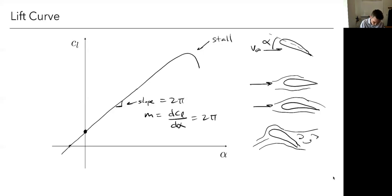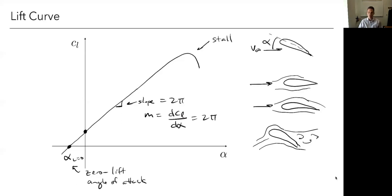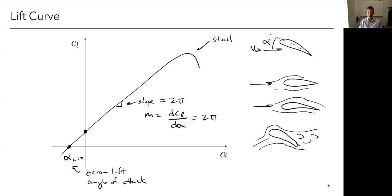Another feature is the zero lift angle of attack — the angle at which we produce no lift. For a symmetric airfoil, this would be zero. But for a cambered airfoil with some curvature, we actually have to go to a negative angle of attack before producing no lift. We can continue into further negative angles of attack — it stays linear and there's actually a negative stall as well, usually earlier than the positive stall, but we typically don't fly there.